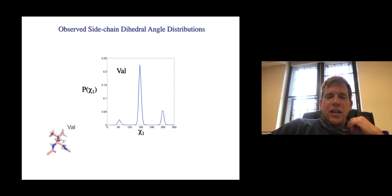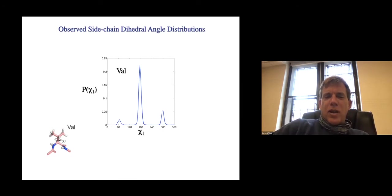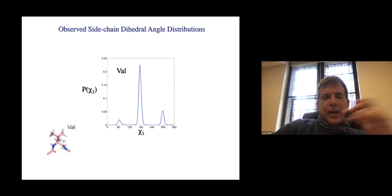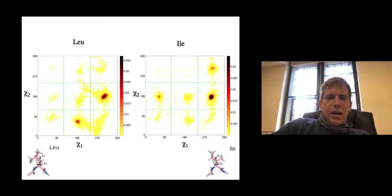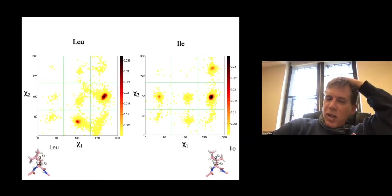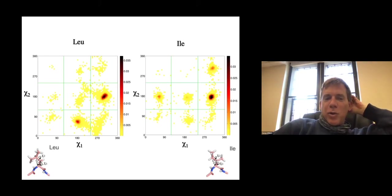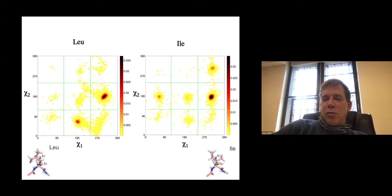This is the valine side chain dihedral angle distribution from x-ray crystal structures. Valine has just one side chain dihedral angle, chi-1. In contrast to threonine, the central rotamer — the 180-degree rotamer — is very highly probable, whereas the outer ones at 60 and 300 degrees are at least a factor of three less likely. Leucine and isoleucine have two side chain dihedral angles; three rotamers per side chain dihedral angle means in principle nine rotamers. Leucine tends to have one very highly populated rotamer and two weakly populated ones, while isoleucine has two more equally probable rotamers.